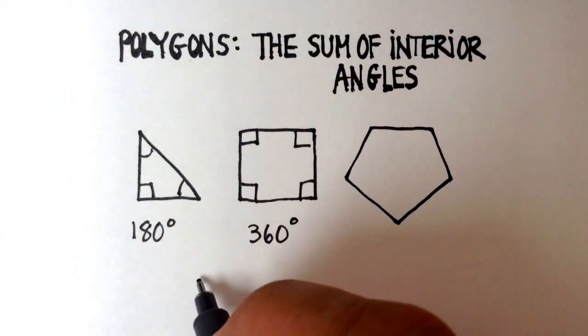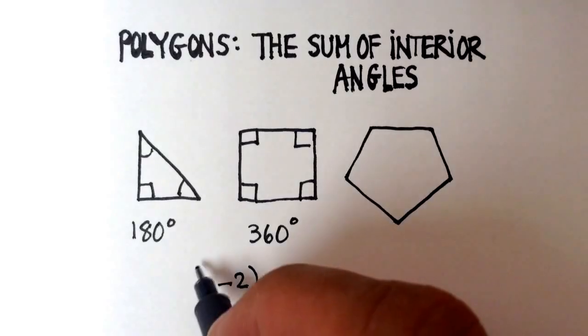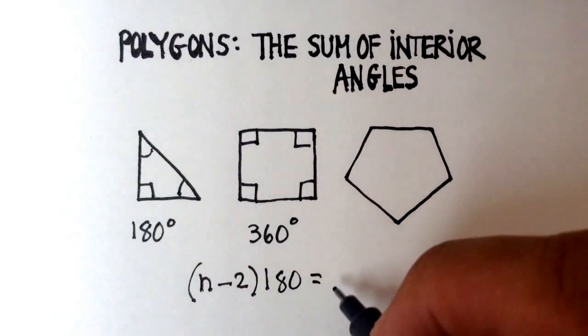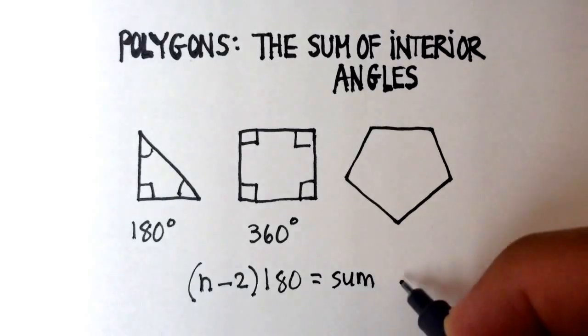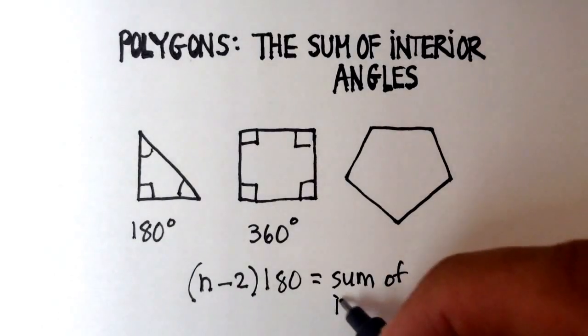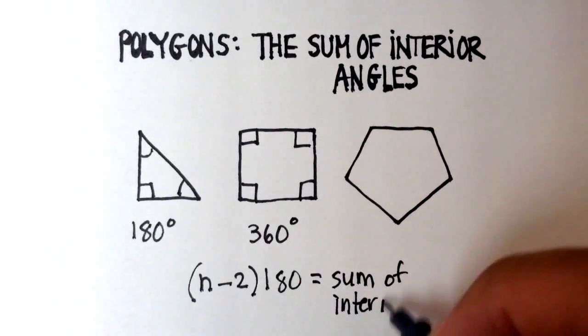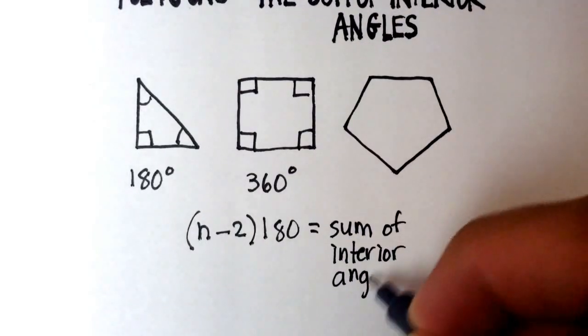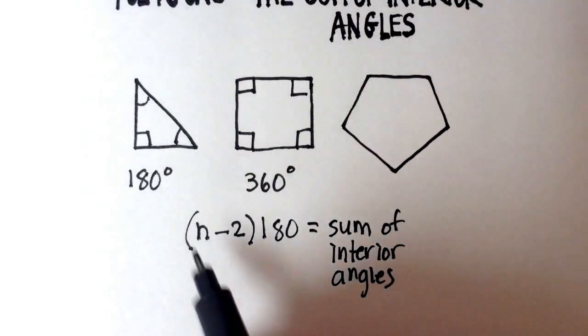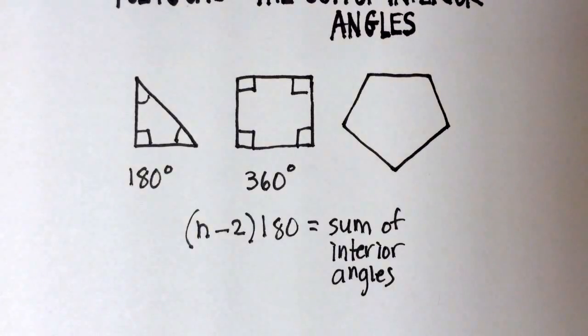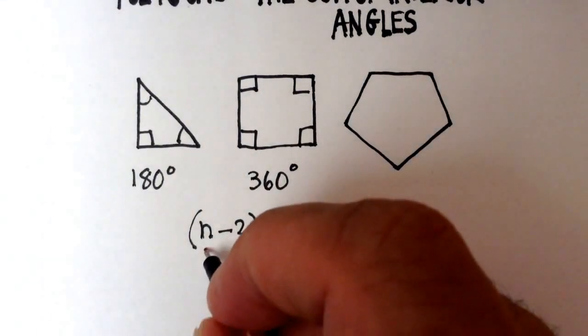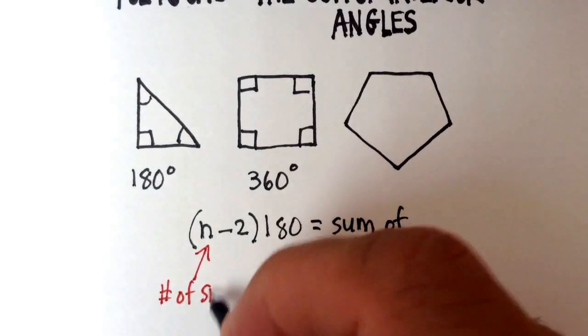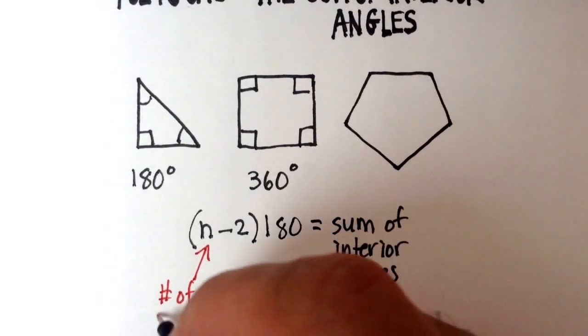And the formula is n minus 2 times 180 is equal to the sum of interior angles. Now what exactly does that mean? Let me just finish that. n is actually the number of sides of your polygon.